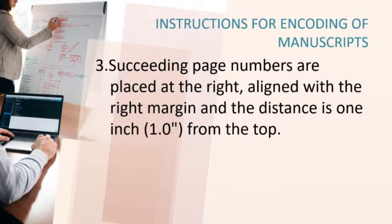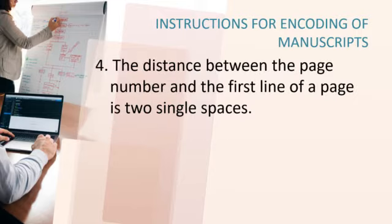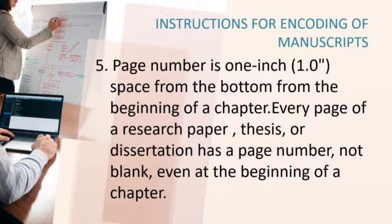Number 3, succeeding page numbers are placed at the right, aligned with the right margin, and the distance is 1 inch from the top. Number 4, the distance between the page number and the first line of a page is 2 single spaces. The page number is 1 inch spaced from the bottom at the beginning of a chapter. Every page of a research paper, thesis, or dissertation has a page number — not blank, even at the beginning of a chapter.